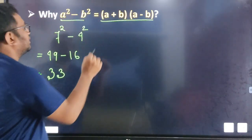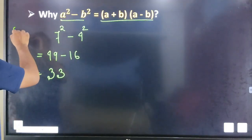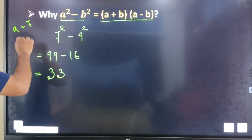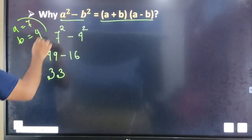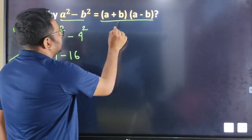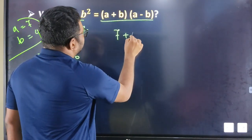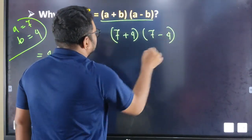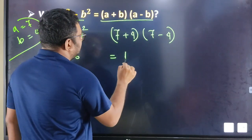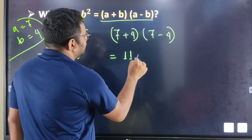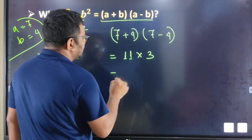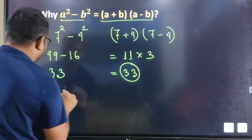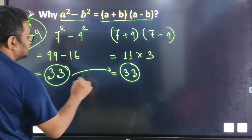This formula will help us get 33. What does this formula mean? A plus b means 7 plus 4 equals 11, and 7 minus 4 means 3. 3 into 11 means 33, so we get the same result.